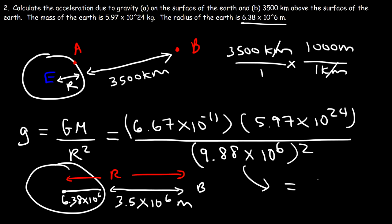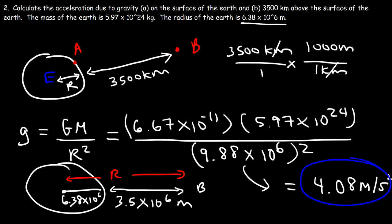The gravitational acceleration is greatly reduced — now it's 4.08 meters per second squared. The gravitational acceleration greatly decreases as you move away from the Earth. It's still present, but it's a lot weaker. The closer you get to the Earth, the greater the acceleration.